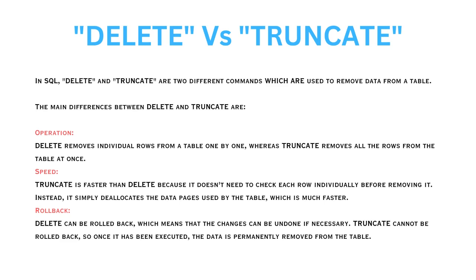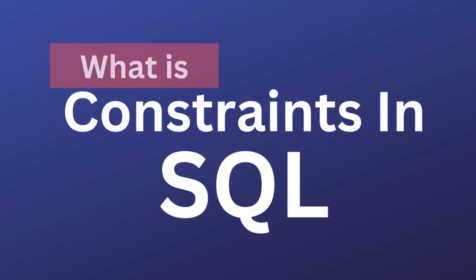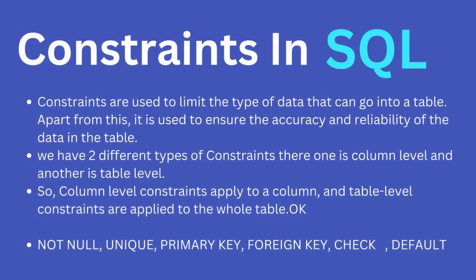The next question is: what are constraints in SQL? Constraints are used to limit the type of data that can go into a table and to ensure the accuracy and reliability of the data. In SQL, there are two types of constraints: column-level constraints, which are applied to a column, and table-level constraints, which are applied to the whole table. Let me give some examples of commonly used constraints.